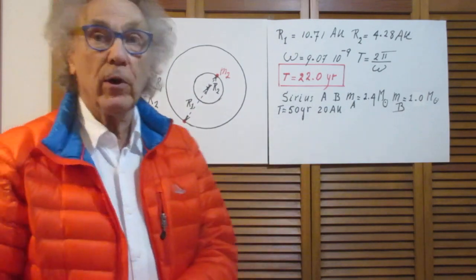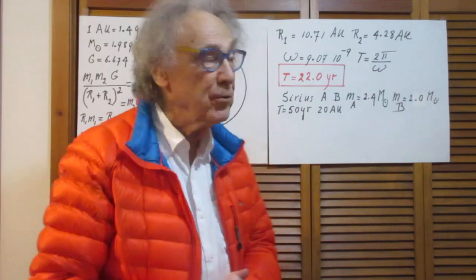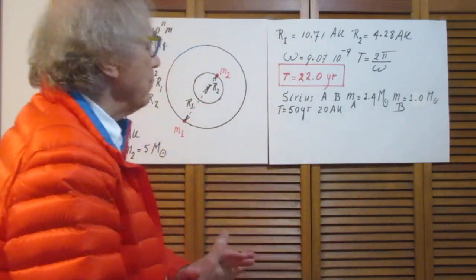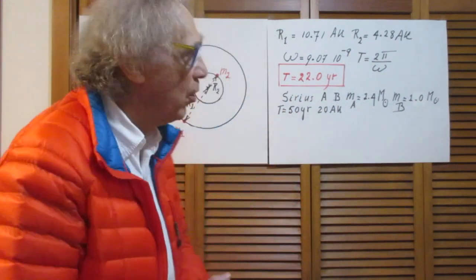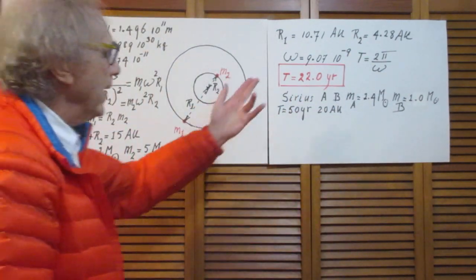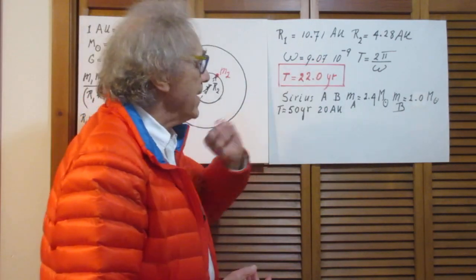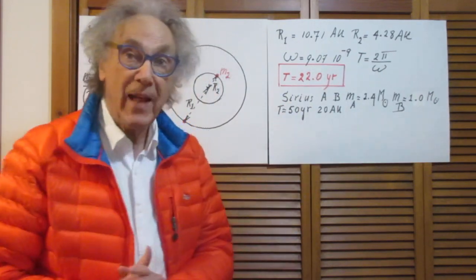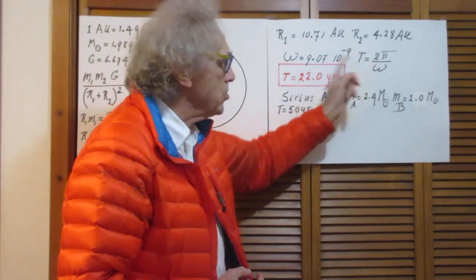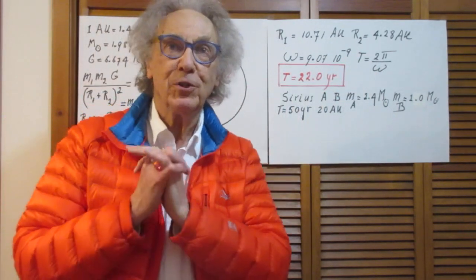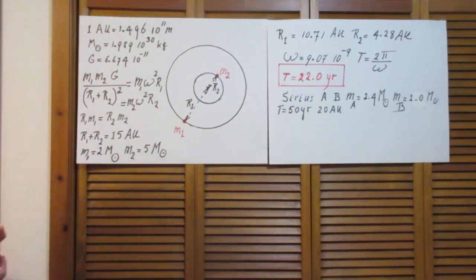If you want to calculate R1 and R2, R1 is about 10.7 astronomical units. I then find that omega in radians per second is 9.1 times 10 to the minus 9. The orbital period is 2 pi divided by omega, and changing units from seconds to years, I find that the orbital period is 22.0 years.